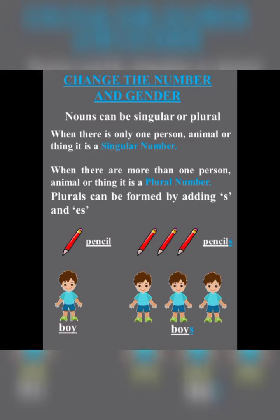Most nouns form plurals by adding 's' at the end. Nouns that end in 'ch', 'sh', 's', double 's', or 'x' are formed by adding 'es' to the singular. Nouns that end in a vowel plus 'y' are also formed by adding 'es' to the singular.